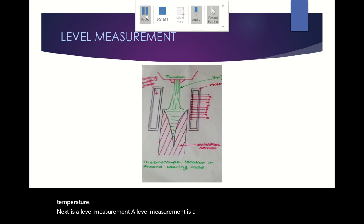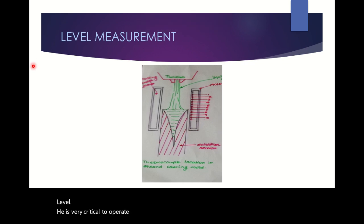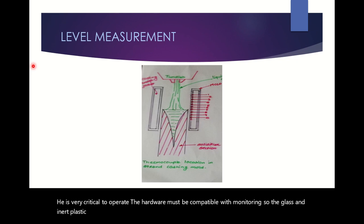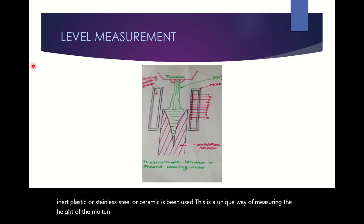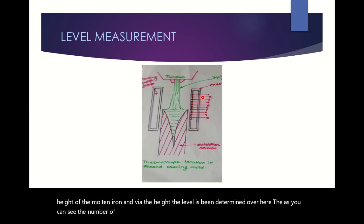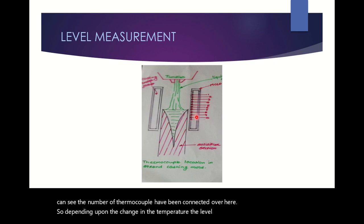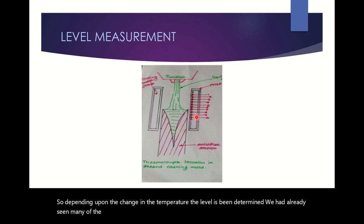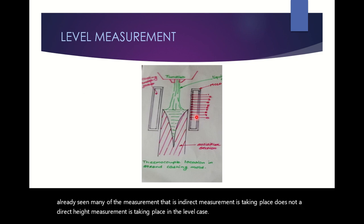Next is level measurement — a very interesting and critical operation. The hardware must be compatible with the monitoring environment, so glass, inert plastic, stainless steel, or ceramic materials are used. A unique method is used to measure the height of the molten iron: thermocouples are connected at various points, and depending on the change in temperature, the level is determined. This is an indirect measurement — not a direct height measurement.